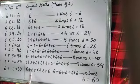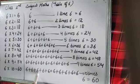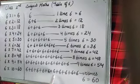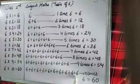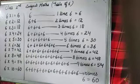Now read after me. 1 times 6, 2 times 6, 3 times 6, 4 times 6, 5 times 6, 6 times 6, 7 times 6, 8 times 6, 9 times 6, 10 times 6. And when there is 10 times 6, it is equal to 60.